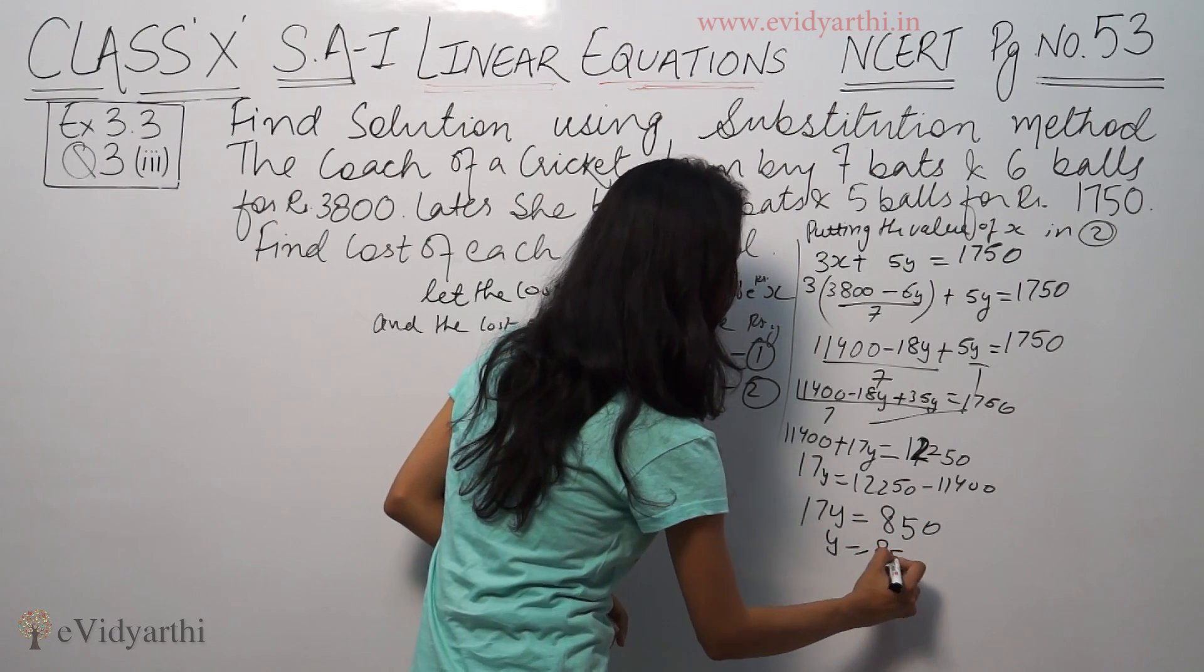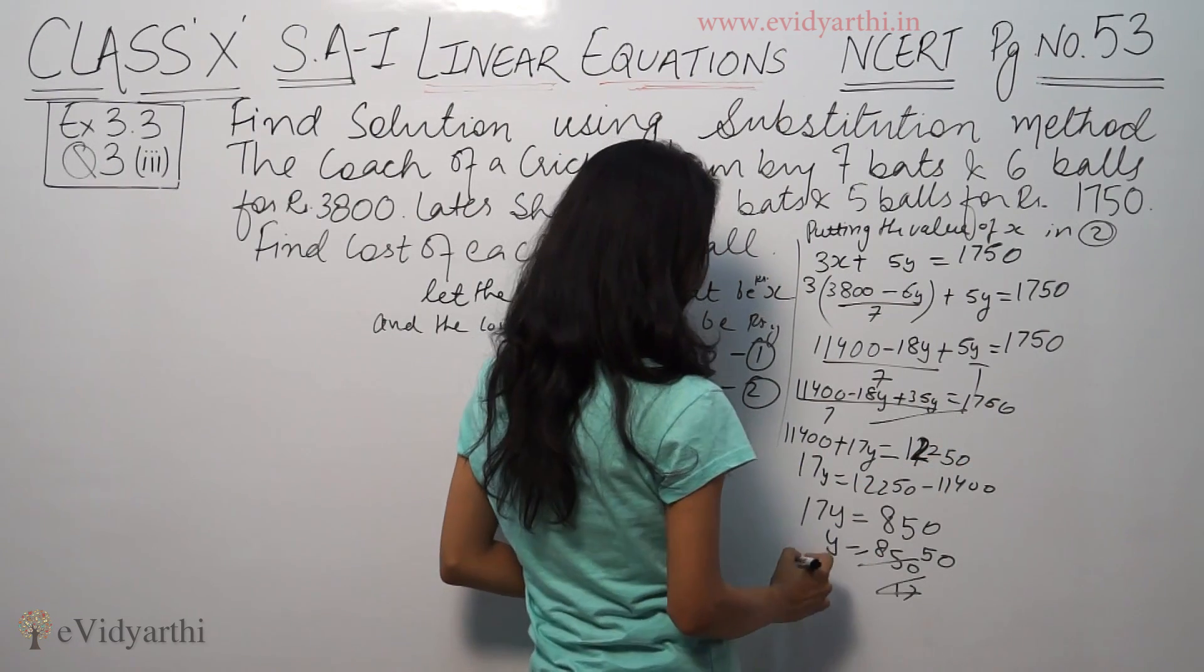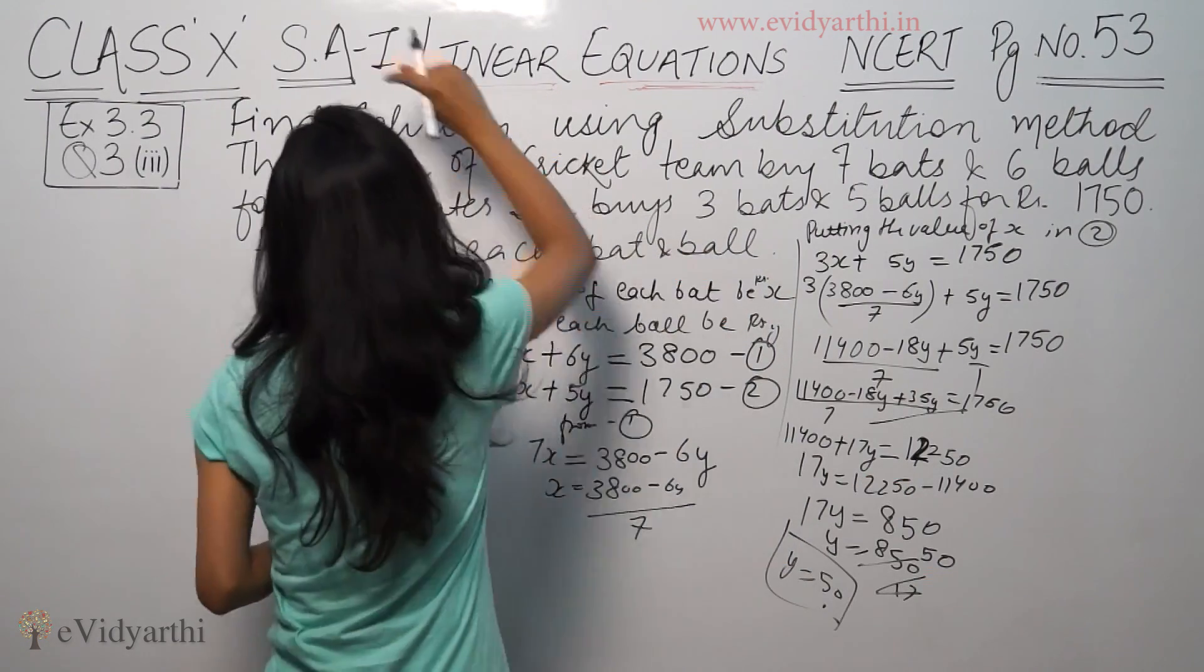So y equals 850 divided by 17 which equals 50. So y is 50.